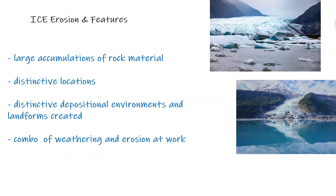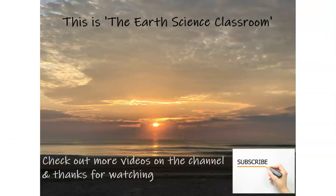In conclusion, glaciers and ice caps, they can accumulate large amounts of rock material. They can transport and also erode large amounts. They create or exist in certain locations that are very distinctive based on temperature and climate elevation. They also look at the distinctive and very obvious landforms that these glaciers can create and the environments that are formed through the deposition of material like moraines and erratics and the beautiful combination of both weathering and erosion at work over a long period of time to shape and sculpt the Earth's landscape. This is the Earth Science Classroom. Thank you for watching. I hope you enjoyed the content. Check out more videos on our channel and don't forget to subscribe.